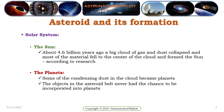Scientists' interest in asteroids is mainly due to their status as remnant debris from the inner solar system formation process. About 4.6 billion years ago, a big cloud of gas and dust collapsed and most of the material fell to the center of the cloud and formed what is known as the sun. Some of the condensing dust became planets, but objects in the asteroid belt never had the chance to be incorporated into planets.